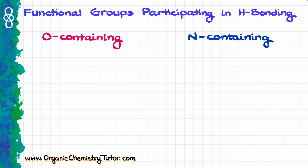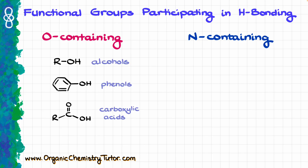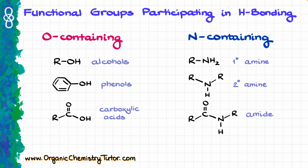Within the scope of organic molecules, we are typically going to focus on OH and NH groups. It's a good idea to quickly review which functional groups have those bonds. For oxygen-containing groups, we have alcohols, phenols, and carboxylic acids. For nitrogen-containing groups, the two most typical ones are primary and secondary amines, and we'll also see amides. If you need a refresher on functional groups, I have a dedicated tutorial linked in the description below.